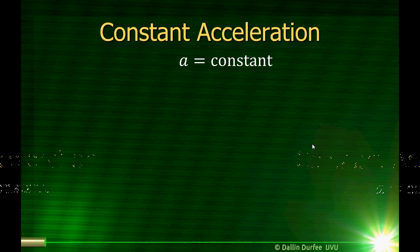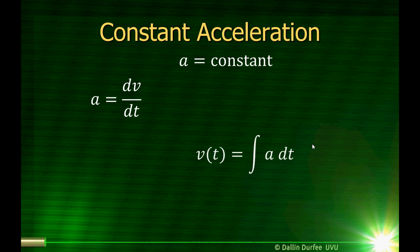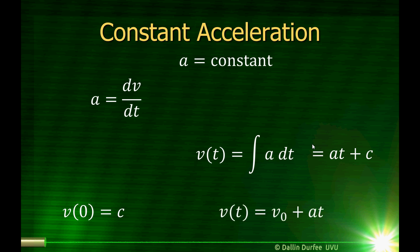If we know the acceleration, I know that acceleration is the derivative of velocity with respect to time, which means I can find velocity by integrating acceleration. If acceleration is constant, this integral is simply equal to at plus a constant. At time t equals zero, a times t goes to zero, so the velocity at time t equals zero is just this constant. So this constant is just the velocity at time t equals zero, which we'll write as v-naught. And we find that the velocity is just equal to v-naught plus at. If the acceleration is constant, then the velocity should change linearly in time, and that's what we found.